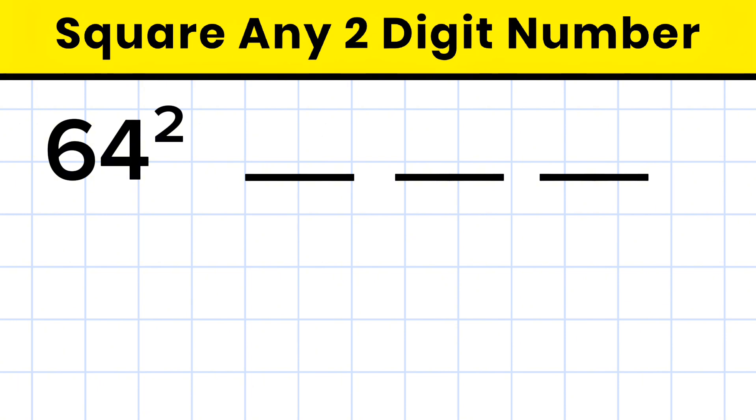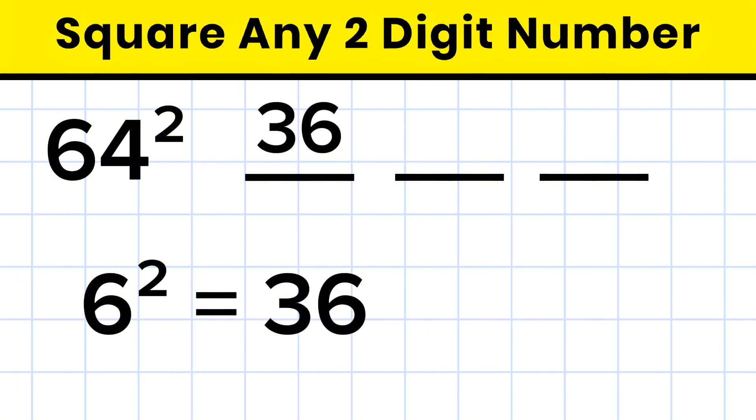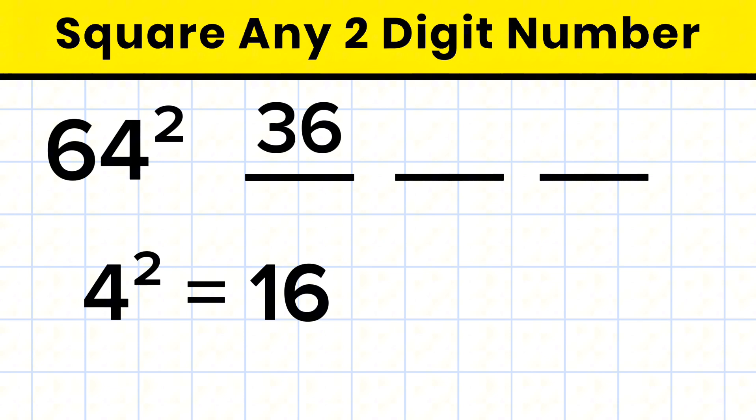What is the 64 square? First we need to do 6 square. That is 36. Write this down in the first box. Now we'll take last digit. That is 4. So 4 square equals 16.